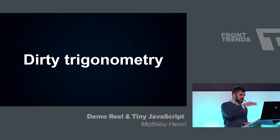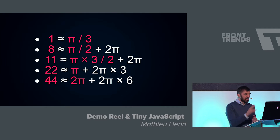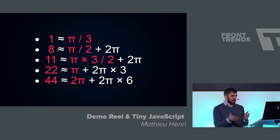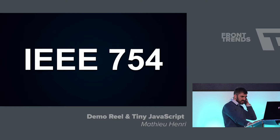To do animations, you will probably want to play a little bit with trigonometry — it's just a word for things that move smoothly around circles and smooth shapes like sine and cosine. For that, you will need to use pi a lot and fractions of pi. If you're aiming for very small file sizes, you need very short versions of fractions of pi. Numbers like 1, 8, 11, 22 are approximations of fractions of pi — for example, pi over 3 is very close to 1, and 8 is very close to pi over 2 plus one full circle. When aiming for very small sizes, these can save precious bytes.